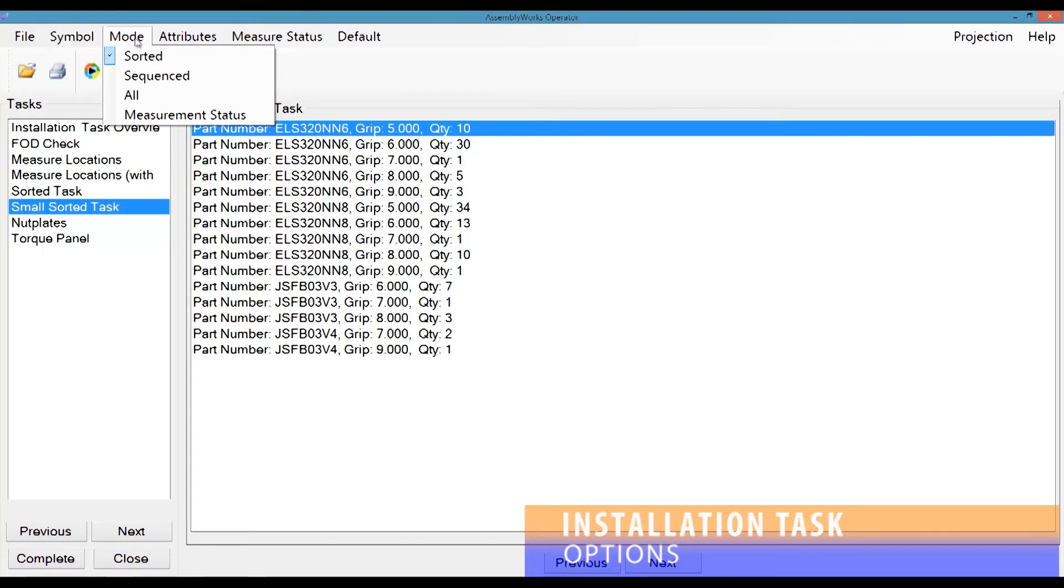While in sorted mode, the user may also change the attributes from the attributes dropdown to alter the sort to the desired method. After any changes are made, the technician can always press the default button to return to the predefined options established by the author.